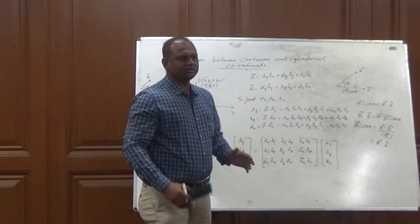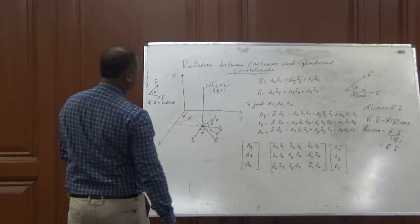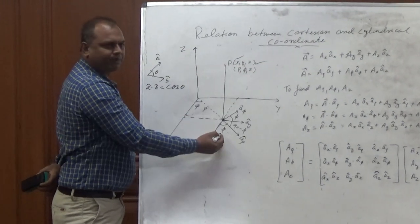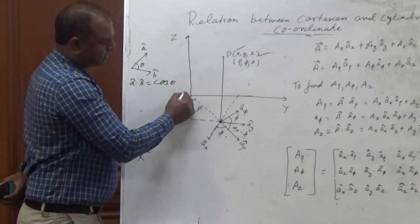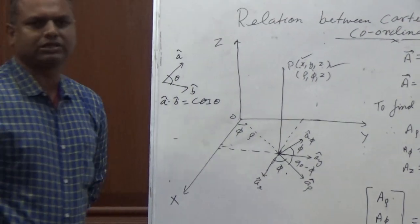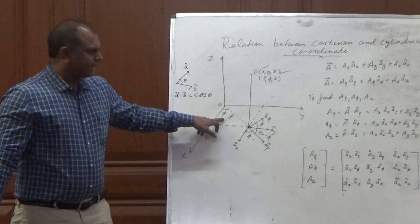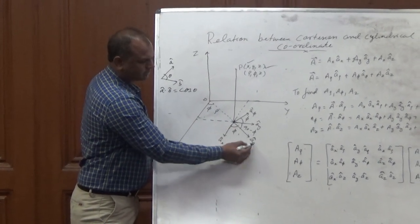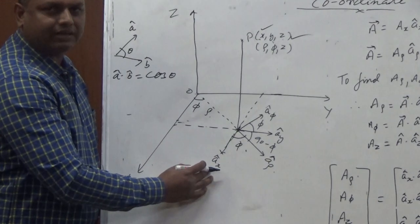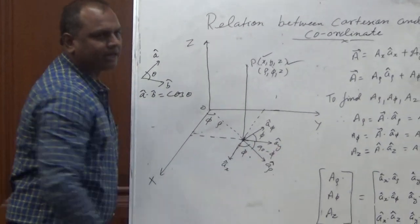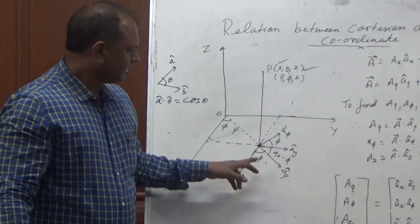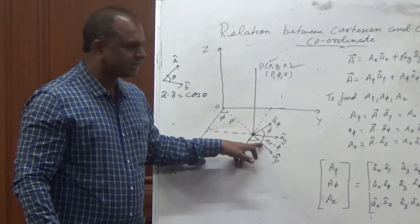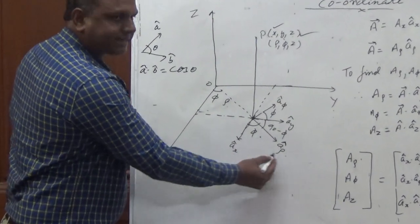To find these angles, consider a point in XYZ. Project this point onto the XY plane, then join that projected point to the origin — this gives you rho, which is the radius of the cylinder. The angle phi is measured from the X axis. The unit vector A-rho is along the radial direction. AX is along the X axis and AY is along the Y axis. A-rho and A-phi are perpendicular, so there is 90 degrees between them. The angle between X and rho is phi.